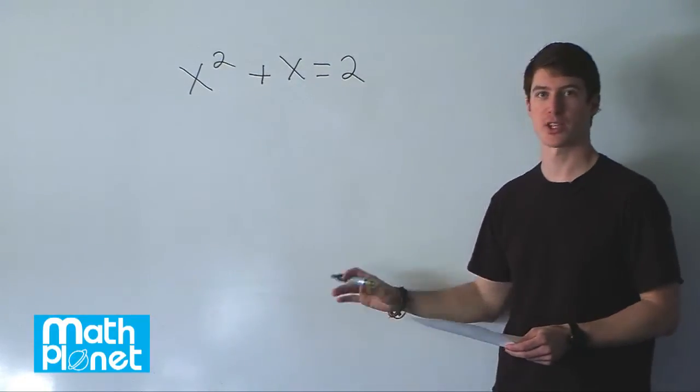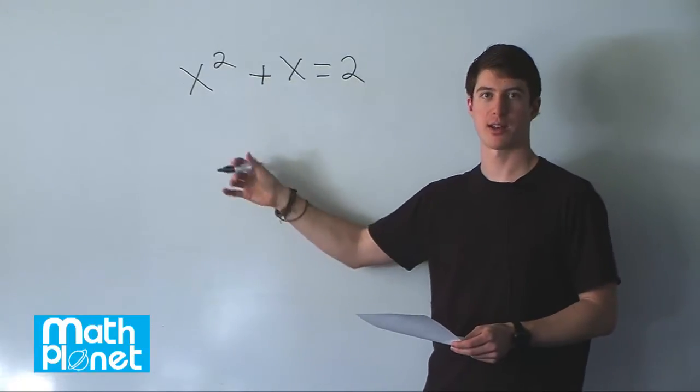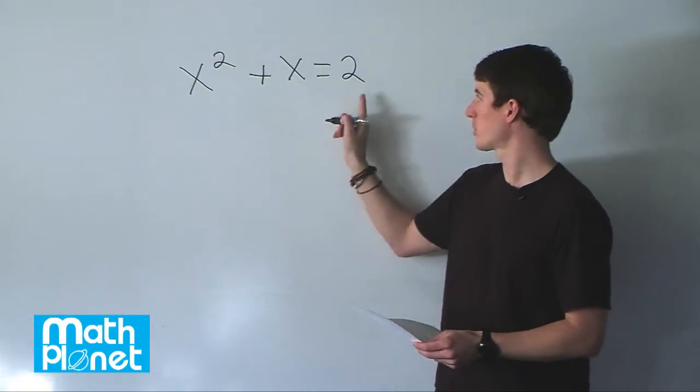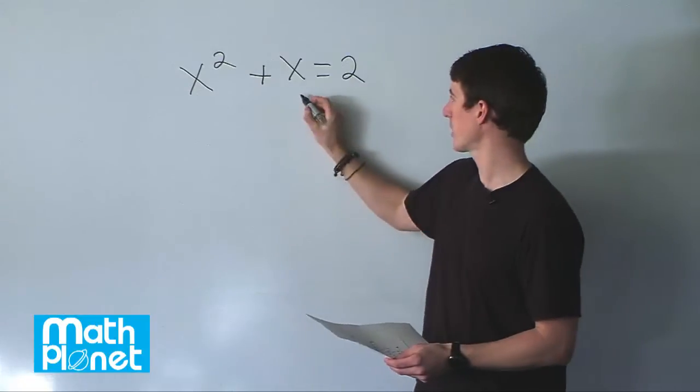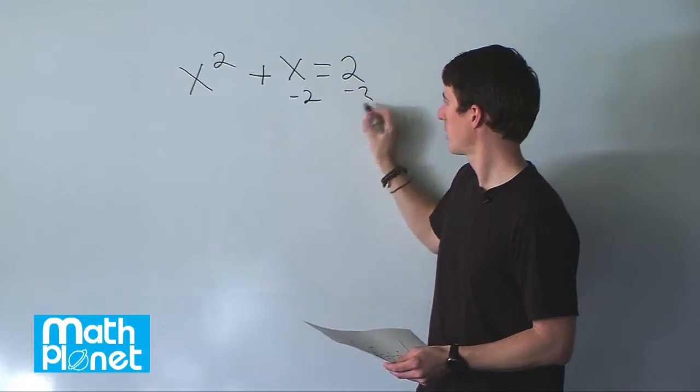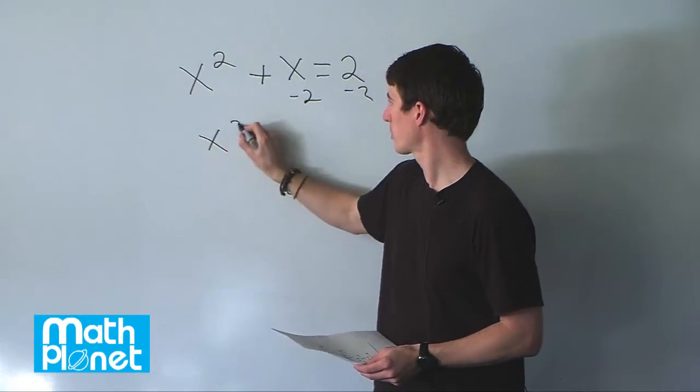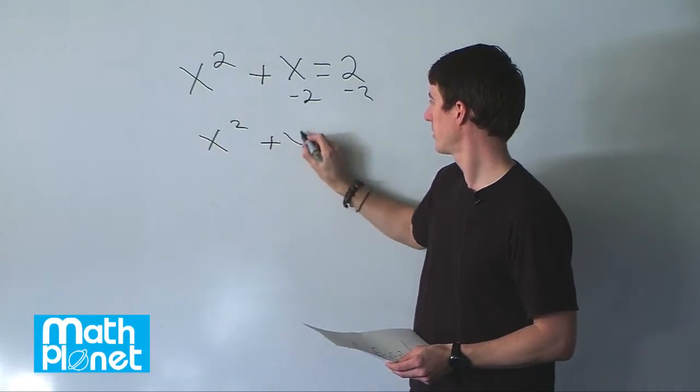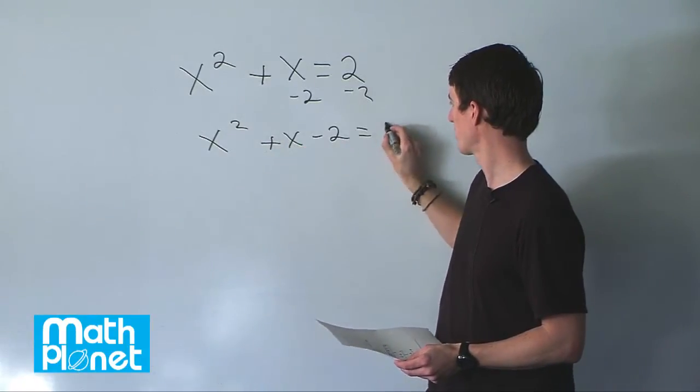To solve this using factorization, we want to move everything to the same side and have it all equal to 0. So we need to subtract 2 from both sides to begin with.